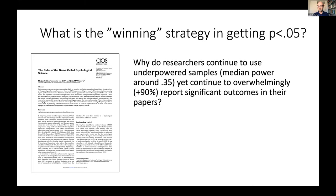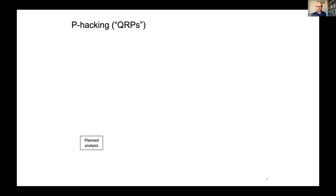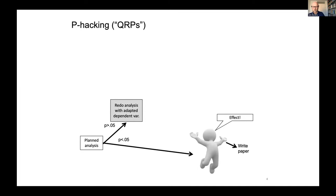So the planned analysis — significant effect — write the paper. If not, well, maybe you can redo the analysis with some alternative outcome variable. This is called selective outcome reporting, or outcome switching. Well established in the medical sciences from randomized control trials because they were pre-registered. And it's very easy to do — actually 63% or so of researchers in psychology, according to anonymous surveys, admitted having used this trick at some point in their career. You can also add some cases — optional stopping, sequential testing. You could also remove some outliers at some particular criteria.